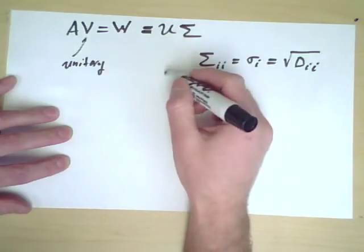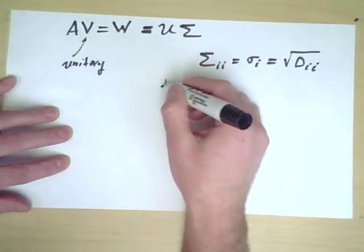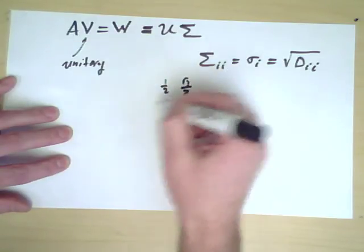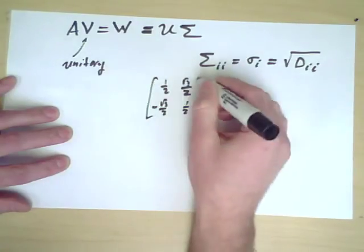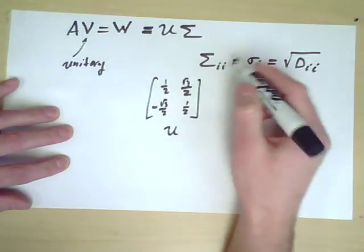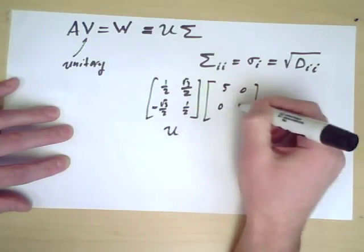So for example, here's a very simple example. Suppose U looks like 1 half, square root of 3 over 2, negative square root of 3 over 2, 1 half, that could be U, and suppose that sigma is 5, 0, 0, 7.